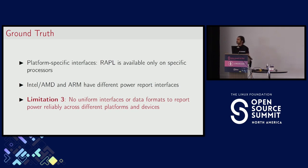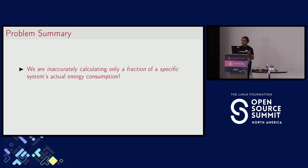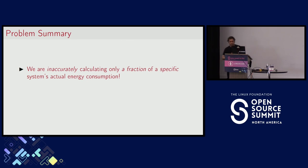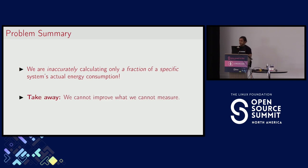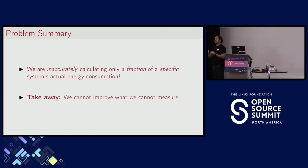I'd like to bring these three problems together: we are inaccurately calculating only a fraction of a specific system's actual energy consumption — we are not even looking at the entire picture. And a key takeaway I want you to remember: we cannot improve what we cannot measure. We must learn to measure energy correctly first, and then we can improve it. And we must improve it, because it determines how we design devices of the future.